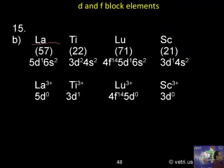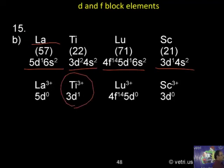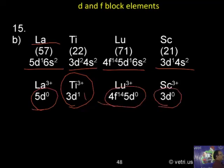Lanthanum (57) is 5d¹6s², titanium is 3d²4s², lutetium is 4f¹⁴5d¹6s², scandium is 3d¹4s². For the 3+ ions: La³⁺ is 5d⁰, Ti³⁺ is 3d¹, Lu³⁺ is 4f¹⁴5d⁰ with f14 completely filled, and Sc³⁺ is 3d⁰. Only in the case of Ti³⁺ is there d¹, so B is the correct answer.